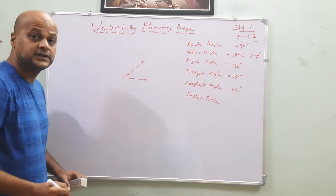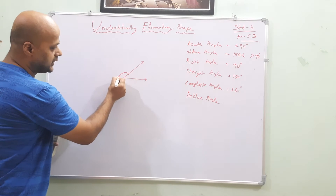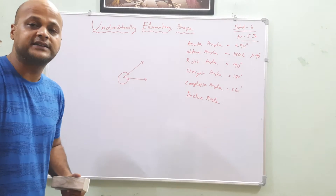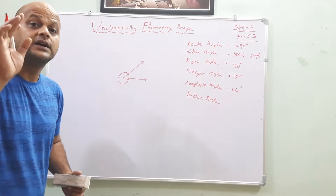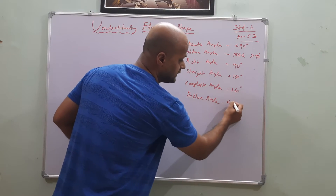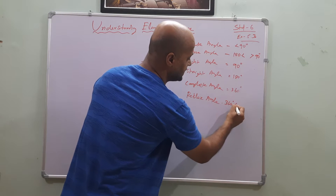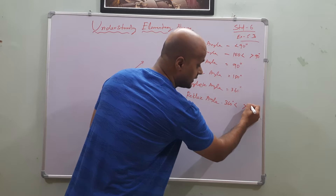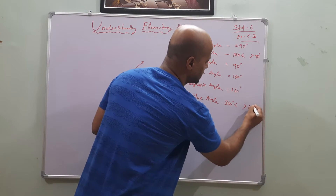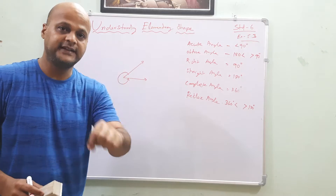Suppose I draw an acute angle here. This is an acute angle. The opposite of this acute angle — meaning I mark the outside angle — is called the reflex angle. So what is the value of reflex angle? It is less than 360 degrees but greater than 180 degrees.